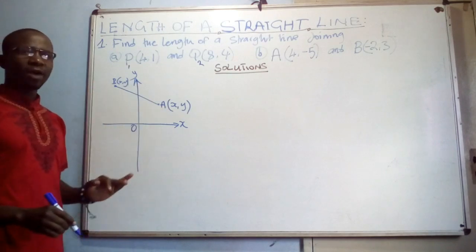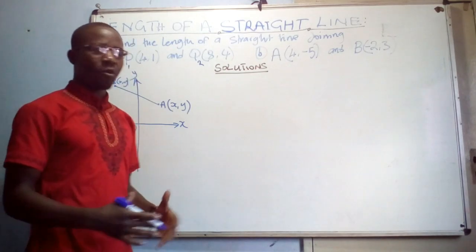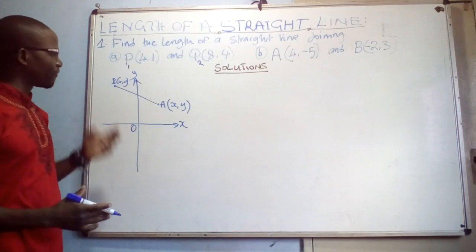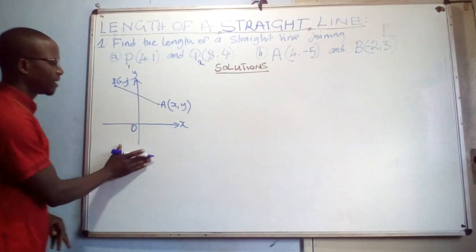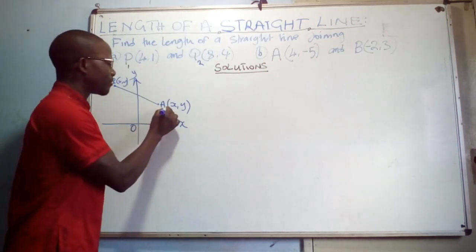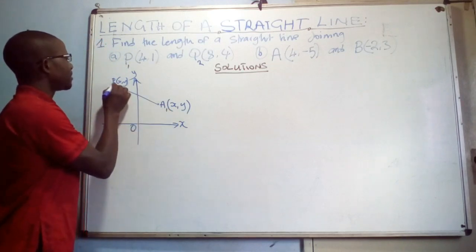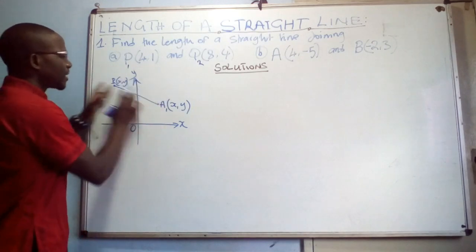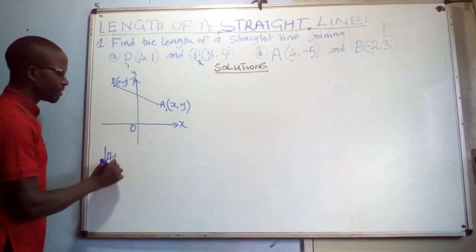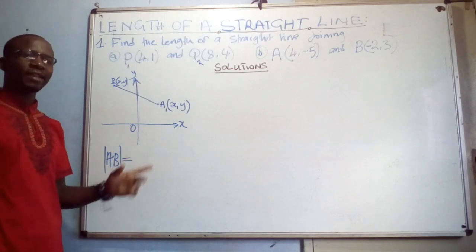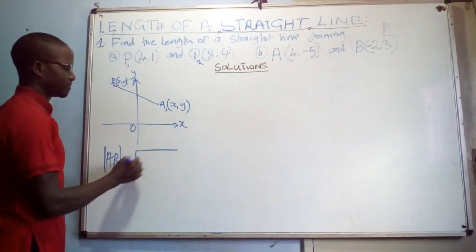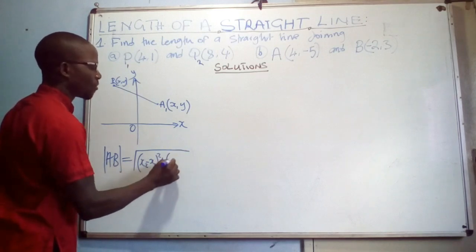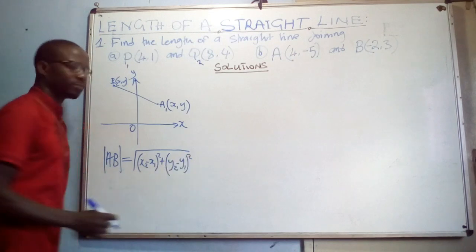A straight line is a connection of two points. We can draw line AB. Now to measure the length of AB — whether on paper with or without a scale — there is a formula. We label the first point as point one and the second as point two. The formula to calculate the magnitude of AB is: |AB| = √((x₂ − x₁)² + (y₂ − y₁)²). This is the formula we use.